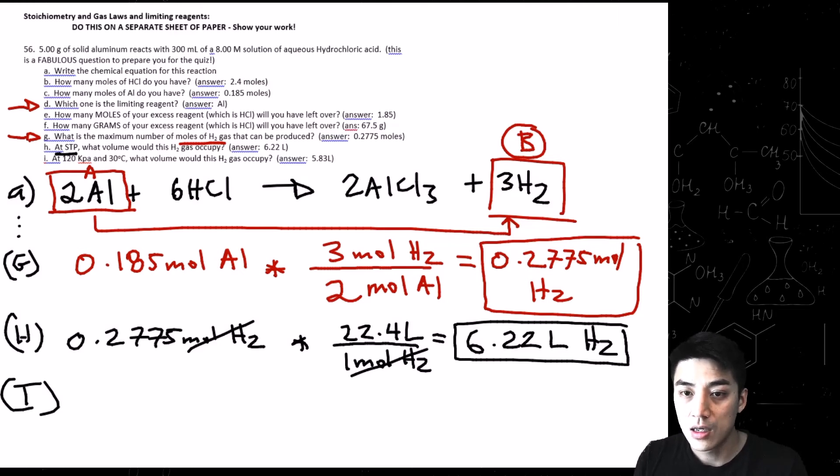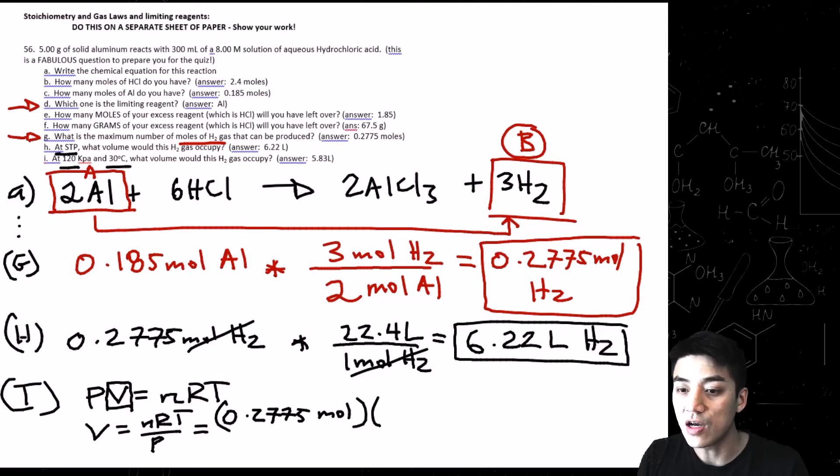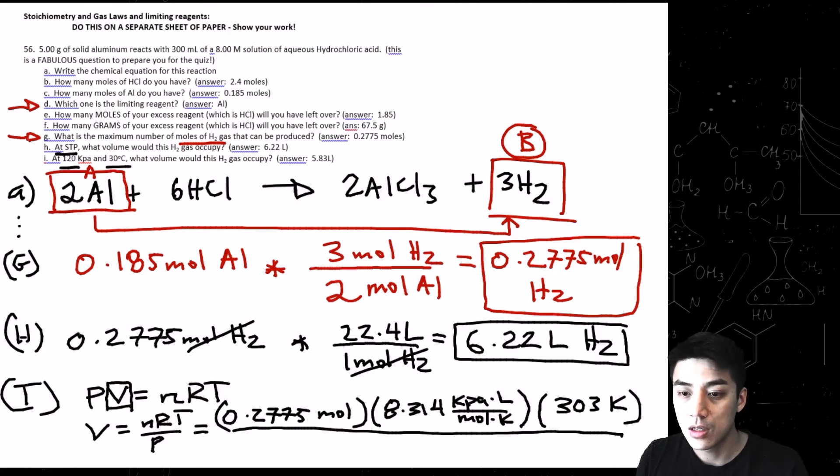And the last problem, letter I, at 120 kilopascals, 30 degrees Celsius, what volume would this H2 gas occupy? So because the pressure and temperature are no longer standard, you have to use ideal gas law, PV equals NRT. Solve for V, because they want to know what volume would this H2 gas occupy. Isolate for V. So we've got NRT over P, and then this becomes a plug-and-chug problem. For N, this represents the moles, so 0.2775 moles of H2, which you found earlier. R is the gas constant in terms of kilopascals, so 8.314 kPa times L over mole K. And finally, for temperature, the temperature was given as 30 degrees Celsius, but we're going to change that to Kelvin quickly. Change it to 303 by adding 273 to 30, and then divide by the given pressure, which is 120 kilopascals.